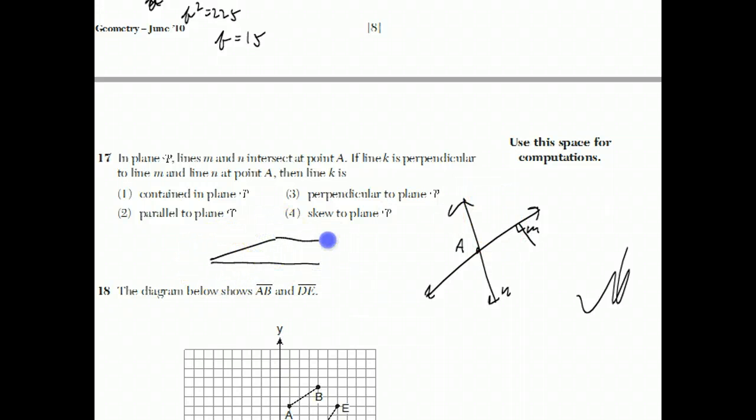So the only way it can happen is if we go into the third dimension. Let me draw a plane P sort of in perspective here. Here's plane P. It goes on forever in all directions. Here's line M and line M this way. And I can make a line that's perpendicular to both by drawing it up like this into the third dimension. So it's perpendicular to plane P. That's a pretty hard question.